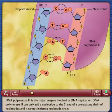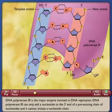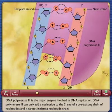DNA polymerase 3 is the major enzyme involved in DNA replication. DNA polymerase 3 can only add a nucleotide to the 3' end of a pre-existing chain of nucleotides and cannot initiate a nucleotide chain.